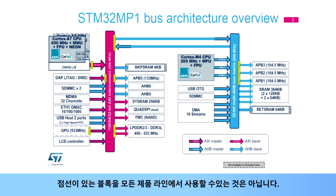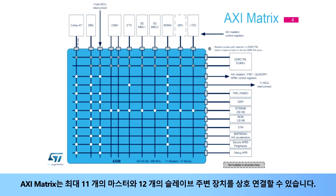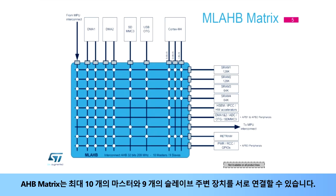Blocks with dashed lines are not available on all product lines. Security is not shown in this overview. The AXI Matrix enables interconnection between up to 11 masters and 12 slave peripherals, while the AHB Matrix enables connection between up to 10 masters and 9 slave peripherals.